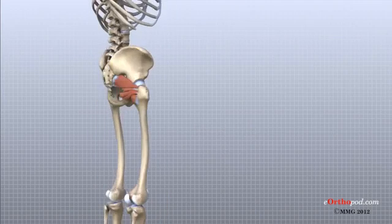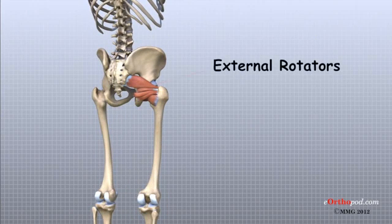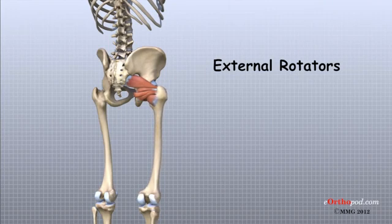Several small muscles travel from inside the pelvis across the back of the hip joint and attach to the back of the upper femur. These muscles help to stabilize the hip joint and rotate the leg outwards. Together, as a group, these muscles are called the external rotators of the hip.